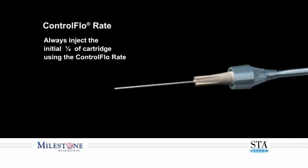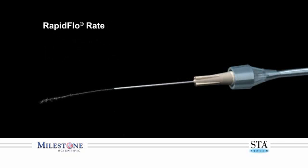Utilize the control flow rate to administer a minimum of one-quarter of the cartridge for the initial phase of the block injection. Once the patient feels the onset of soft tissue anesthesia, transition to the rapid flow rate.